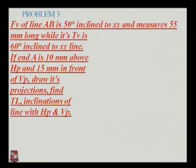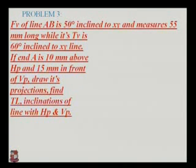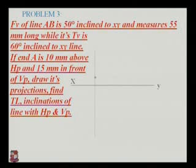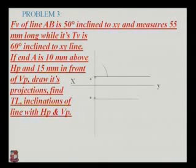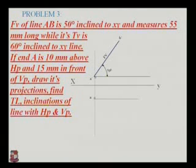Example three: the front view of line AB is inclined at 50 degrees to the XY line and measures 55 mm long. Its true length line is inclined at 60 degrees to the XY line. End A is 10 mm above HP and 15 mm in front of VP. Draw the XY line, locate A-dash 10 mm above and point A 15 mm below the XY line. Draw horizontal projection lines from A-dash and A. Draw the front view A-dash to B-dash at 50 degrees, 55 mm long.